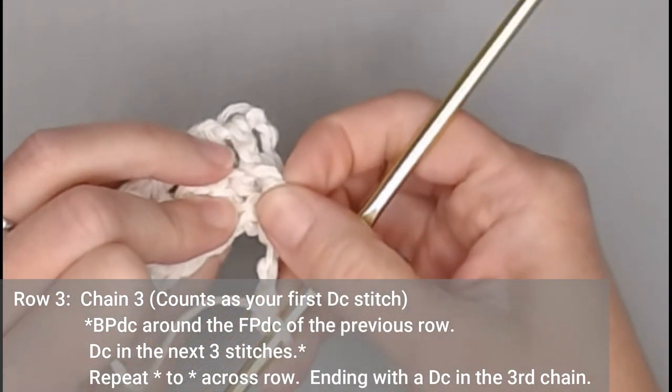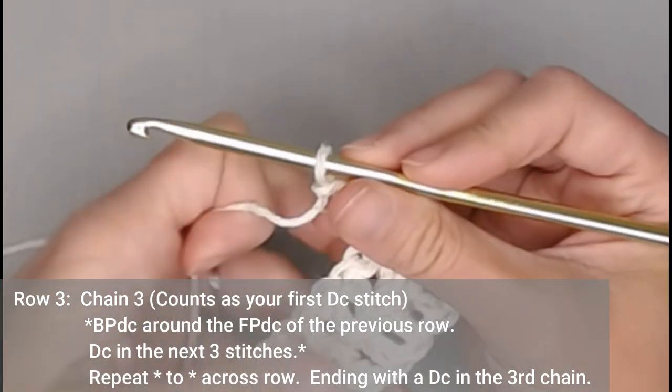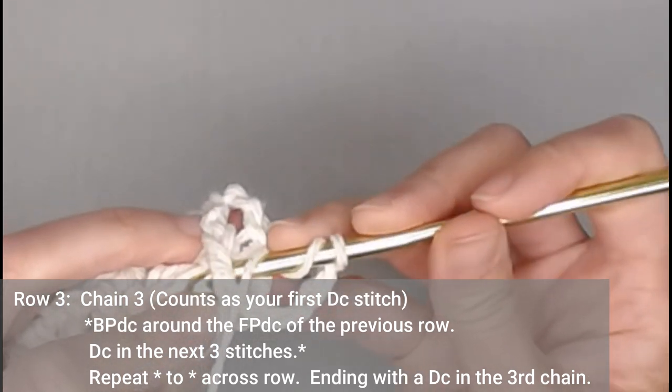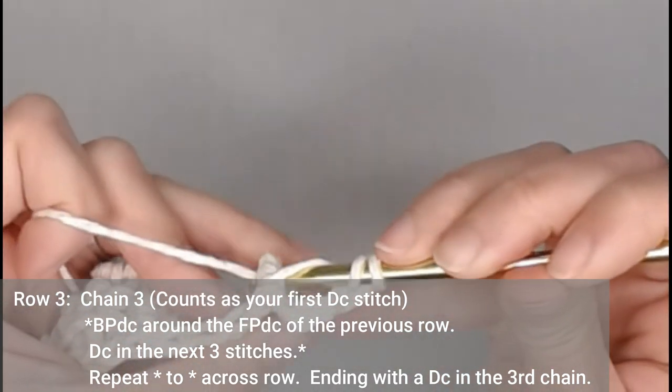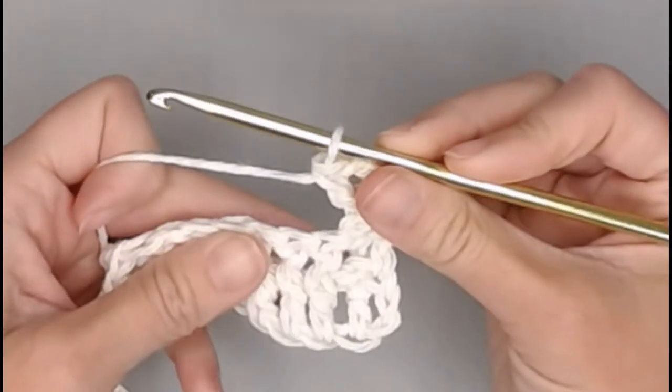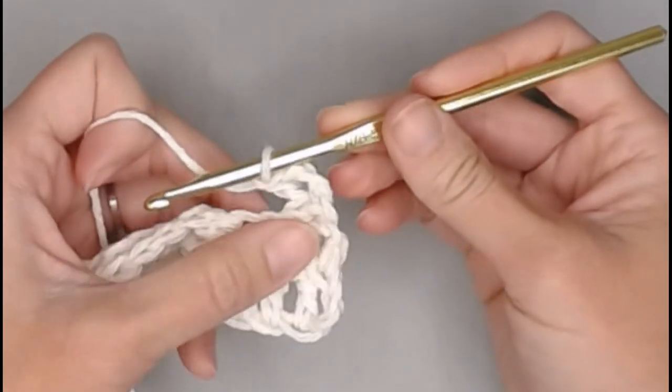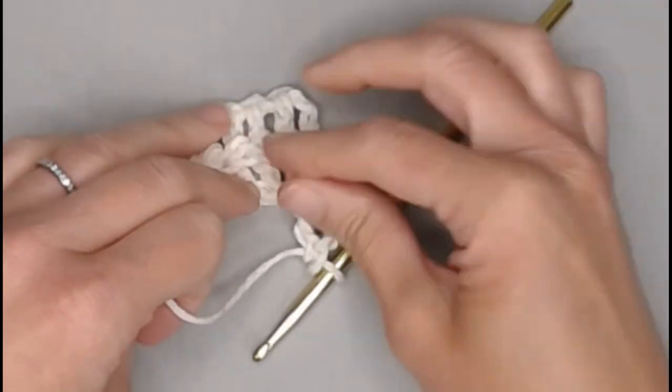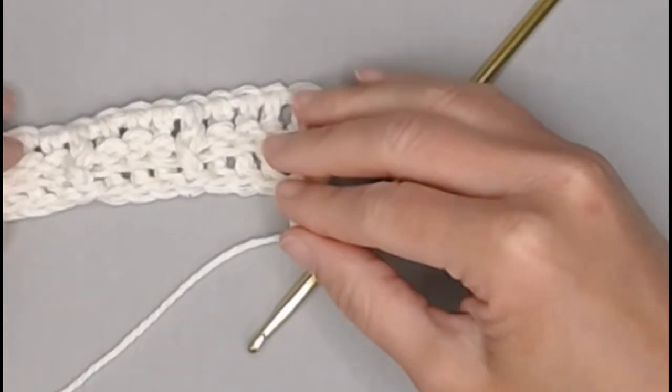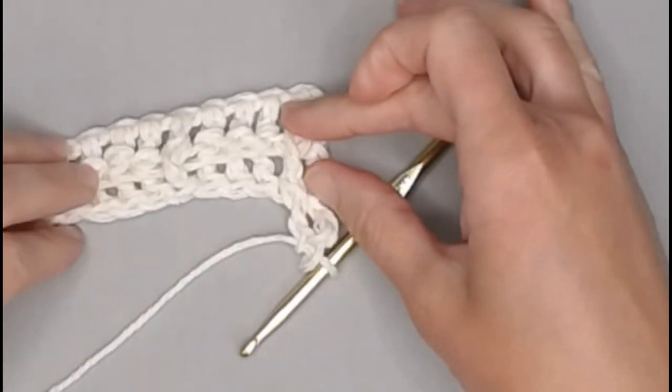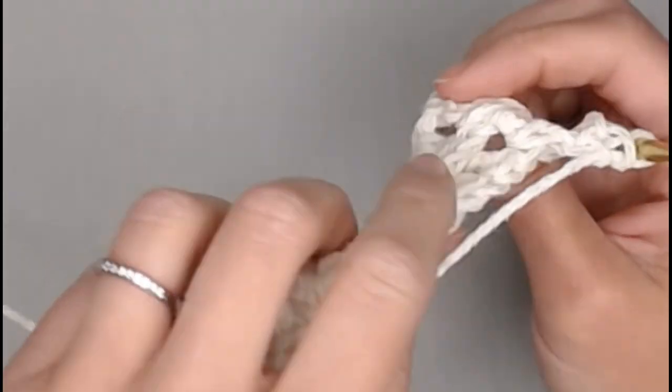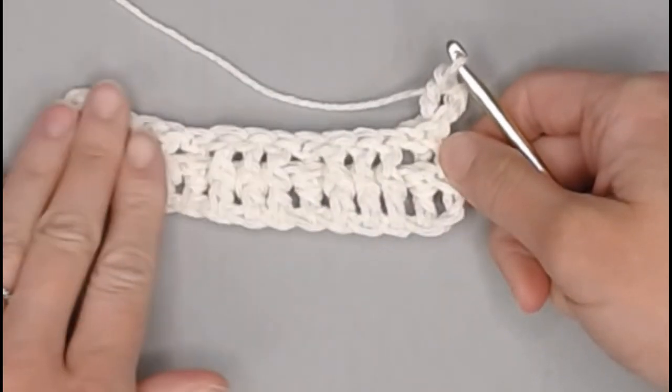Back post double crochet around the front post of the previous row. Come through. See the pronounced stitch? Just go behind it. Yarn over, pull through. Yarn over, pull through two. Yarn over, pull through two. We want to back post double crochet here. Because we want all the posts to stay on one side of this creation. You'll notice that all the texture will be on one side. There we go. Continuing this line all the way up. And on the other side, it will be relatively flat.